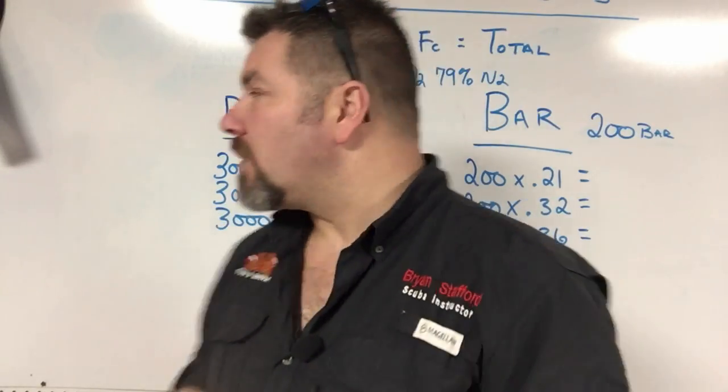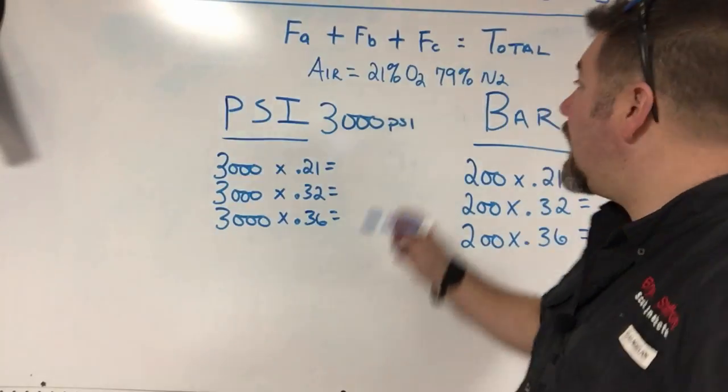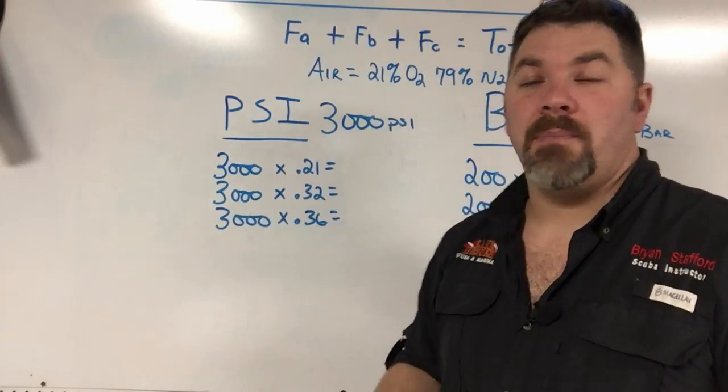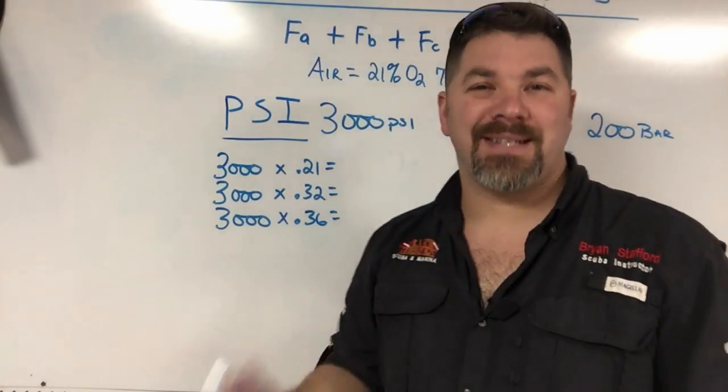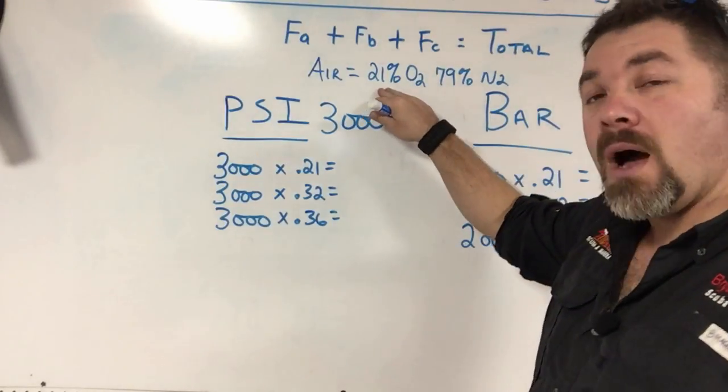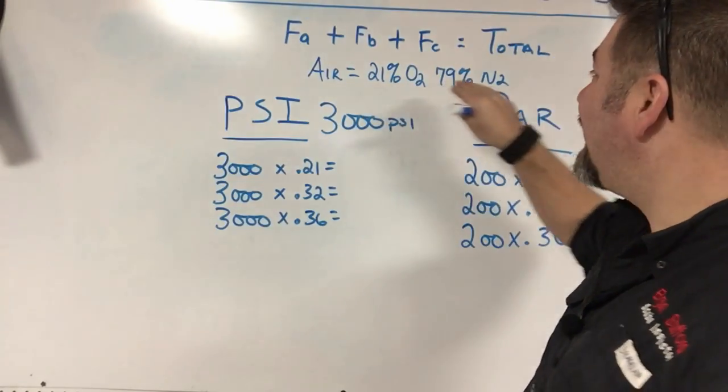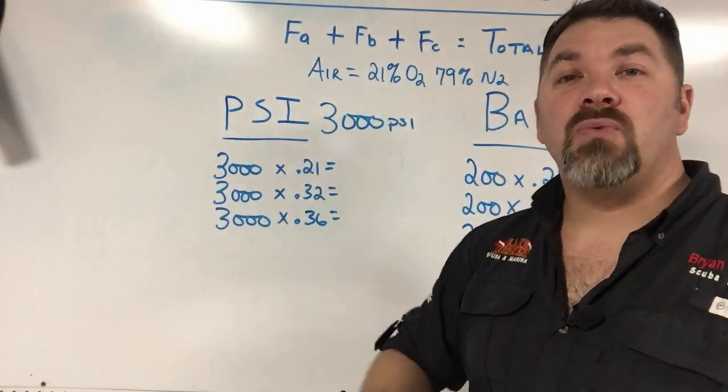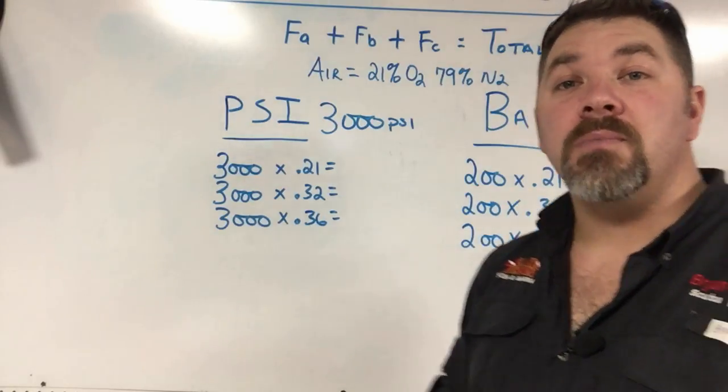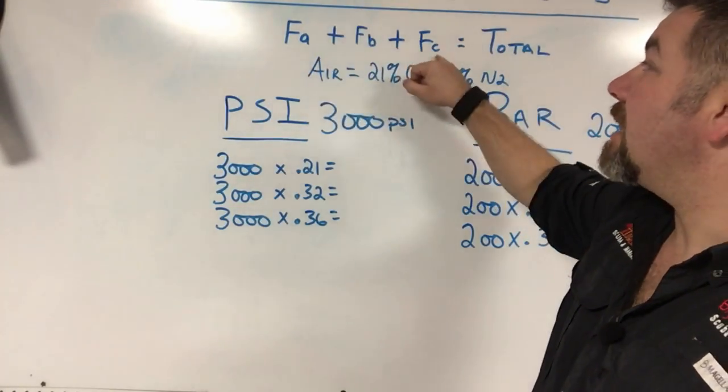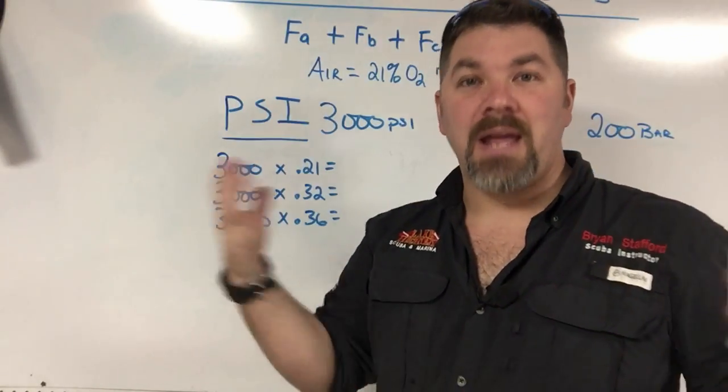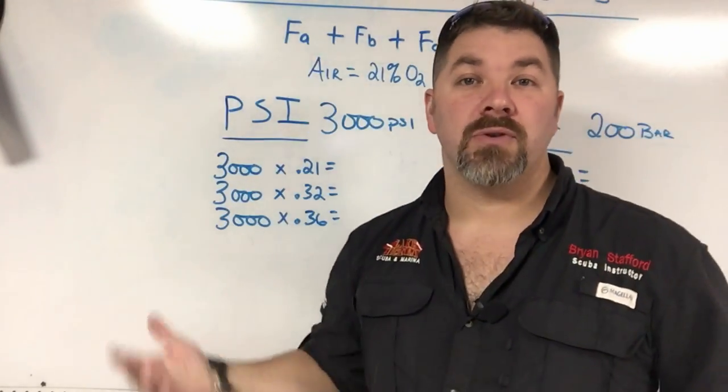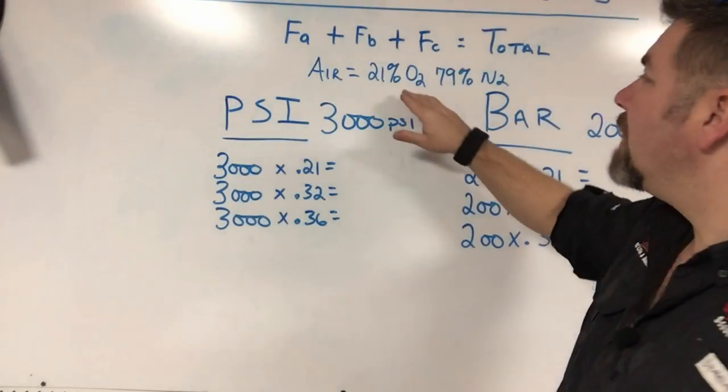When we talk about partial pressure, we're talking about the actual mixture or ingredient that makes up a gas. If we took air—21% oxygen and 79% nitrogen—those two individual ingredients are what we consider partial pressure. This comes from Dalton's law, which says if you take all the individual gases that make up a blend and add them together, you get a total gas or total pressure.